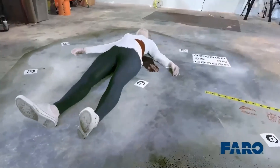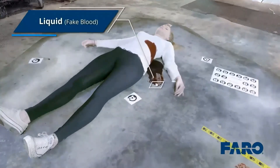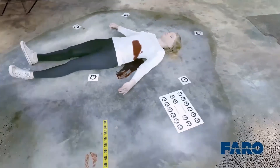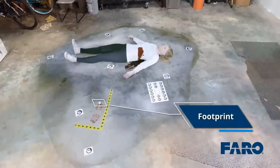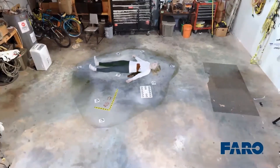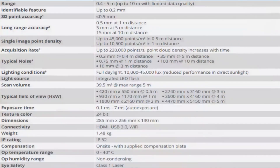With the Freestyle 2 you can now capture liquid. Water is still a little bit of a problem, but thicker liquids like the fake blood in the example are captured quite well. The accuracy ranges from 0.5 millimeters to 15 millimeters, depending on the scan distance setting.